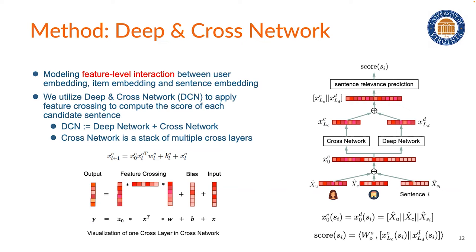By explicitly modeling feature-level interaction between user embedding, item embedding, and sentence embedding, we utilize DCN to integrate user and item output from the GAT into the sentence prediction layer. This design helps our model to realize better sentence prediction.